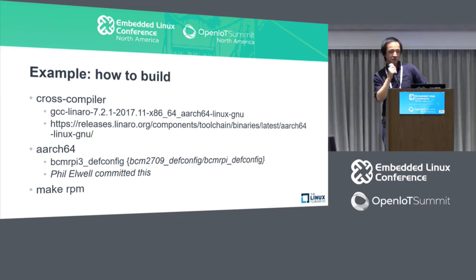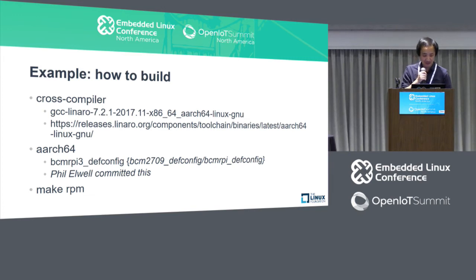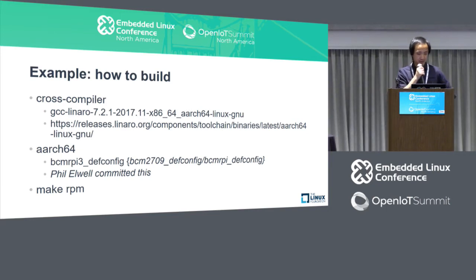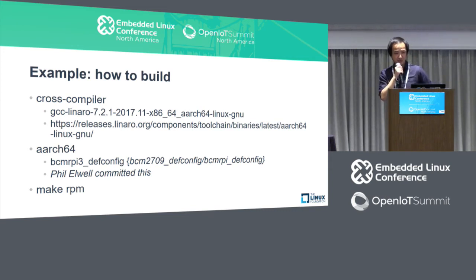Let me show one example of how to build this. In my case I'd like to use cross-compilation, though you can definitely build Raspberry Pi on the Raspberry Pi platform itself. If you want to use cross-compilation, you can download the toolchain from Linaro — I use the 64-bit version. We've already enabled preempt-RT by default, so if you use the default config file, you can get that enabled. You can also run make and install the packages, though this depends on your distribution.